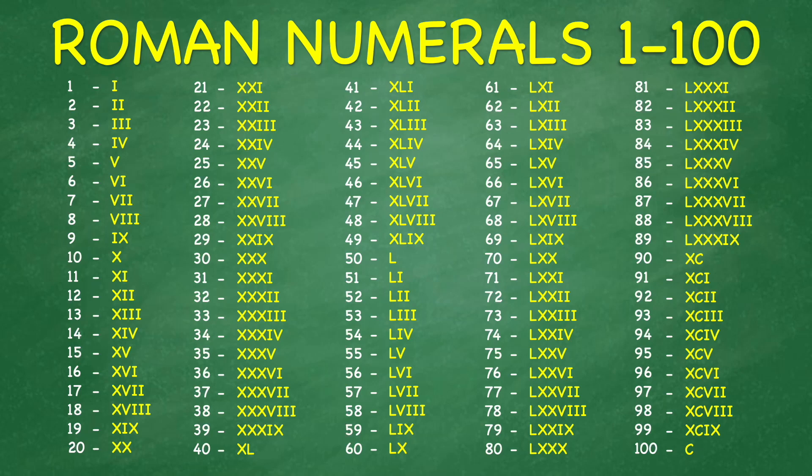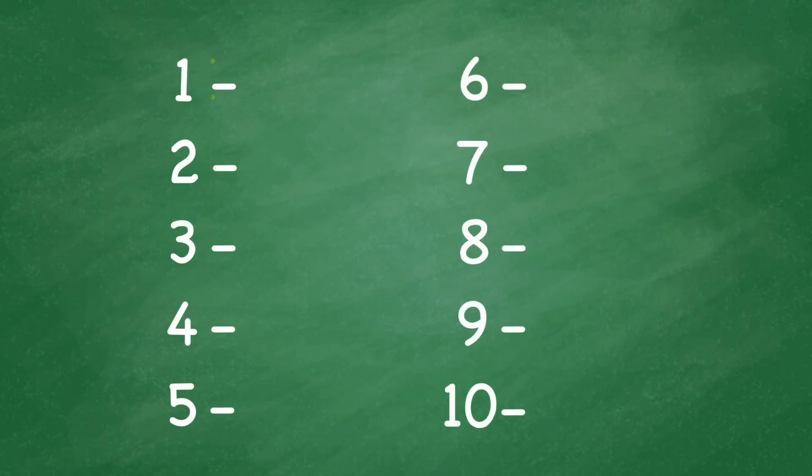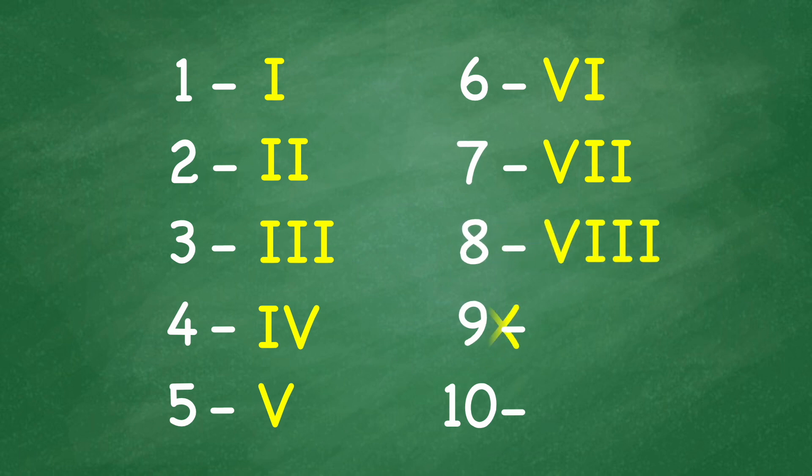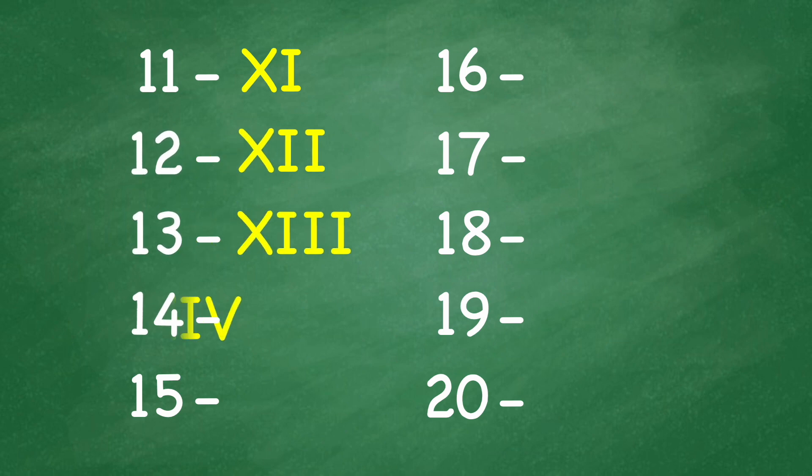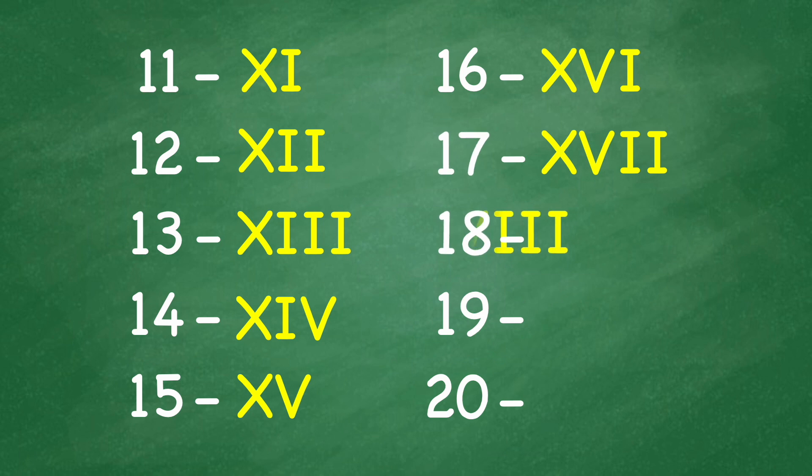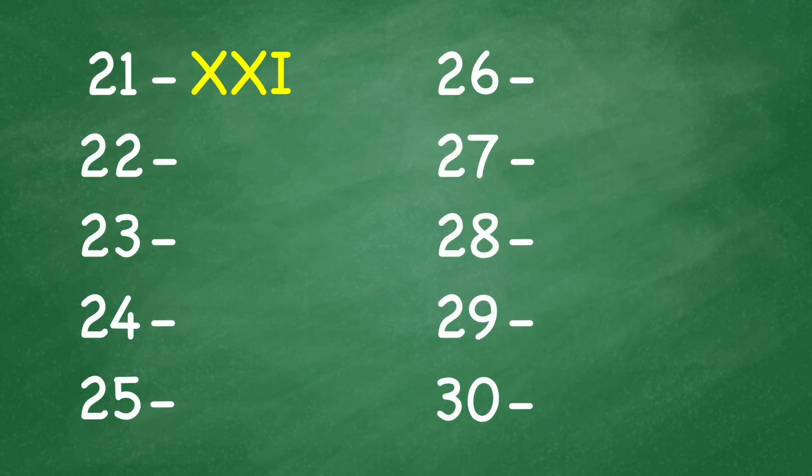Roman numerals 1 to 100. 1, 2, 3, 4, 5, 6, 7, 8, 9, 10, 11, 12, 13, 14, 15, 16, 17, 18, 19, 20.